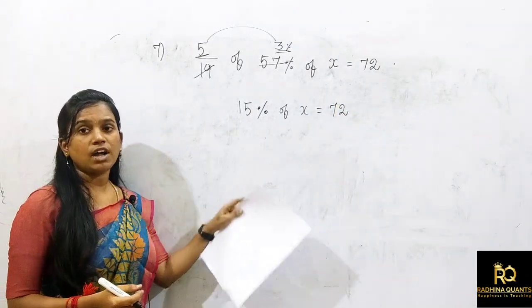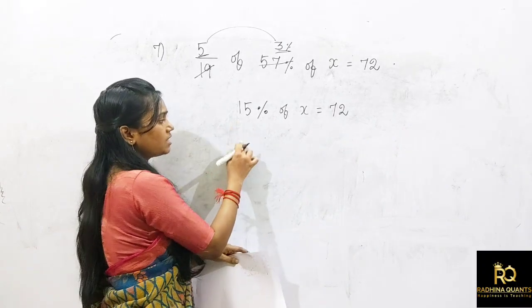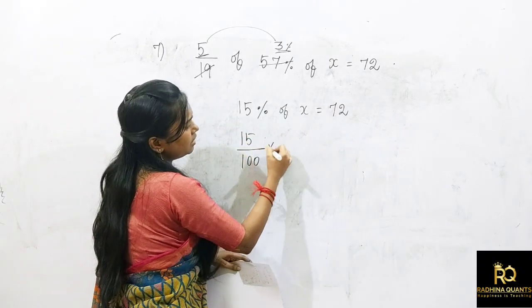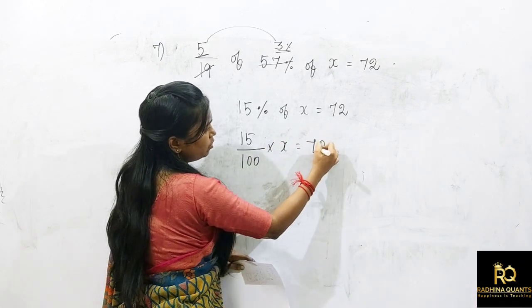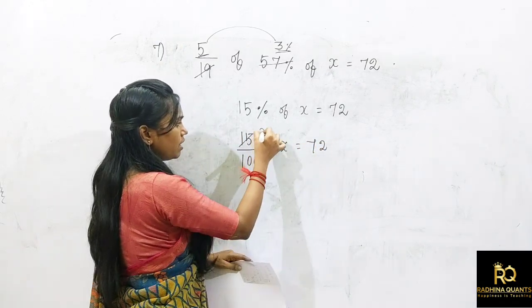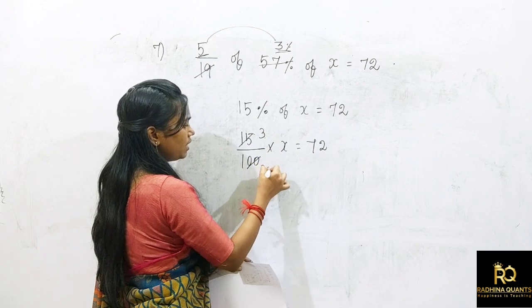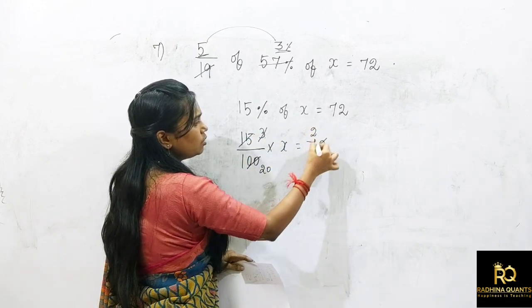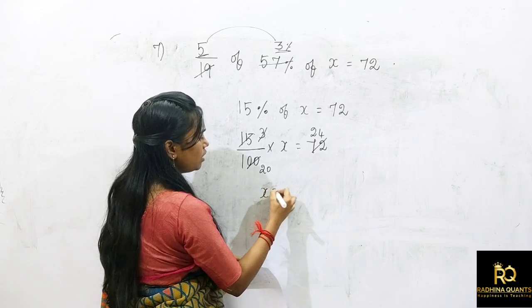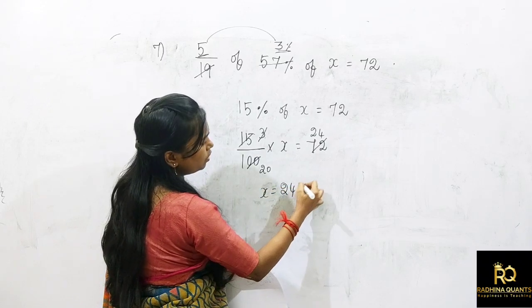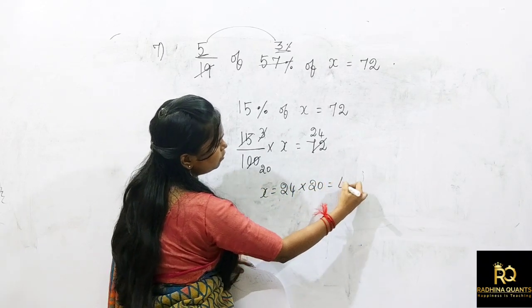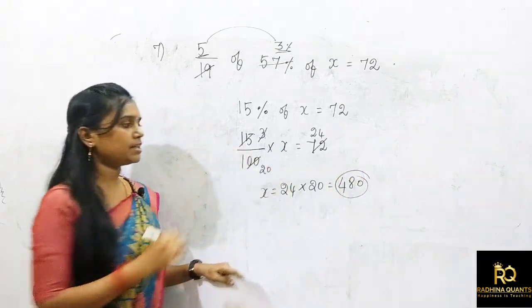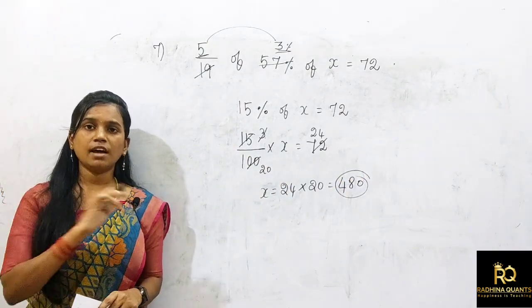Percentage equals fraction: 15/100 × x = 72. Simplify: 15 by 100 — cancel 5 gives 3/20. So x = 72 × 20/3. 24 × 20 = 480. So x equals 480.